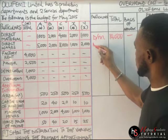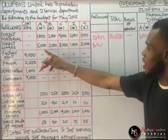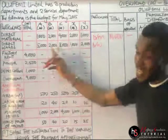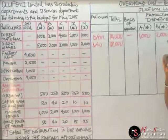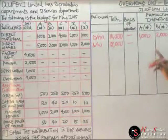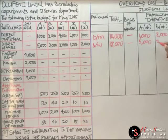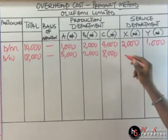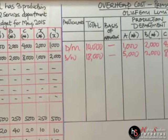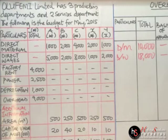Next is direct wages. The total is 5,000 + 2,000 + 8,000 + 1,000 + 2,000, giving us 18,000. The basis of apportionment is also a dash since the values have been given already. Department A: 5,000; B: 2,000; C: 8,000; X: 1,000; Y: 2,000.